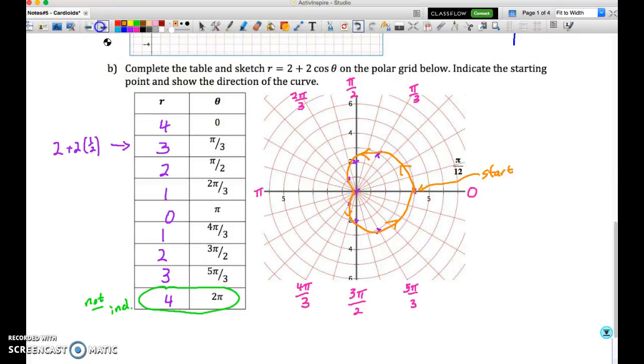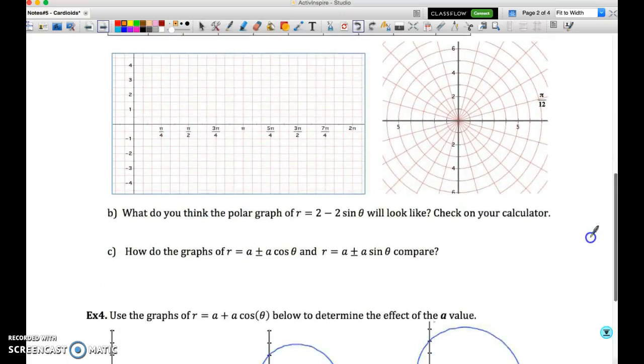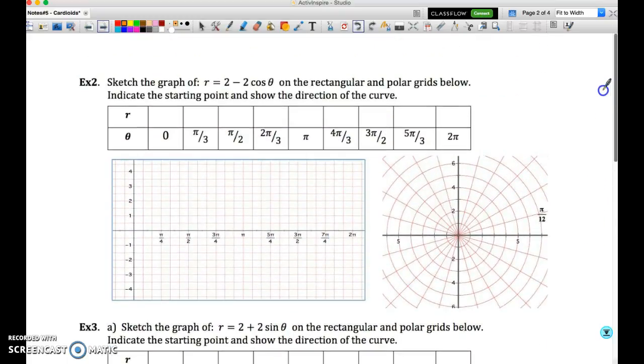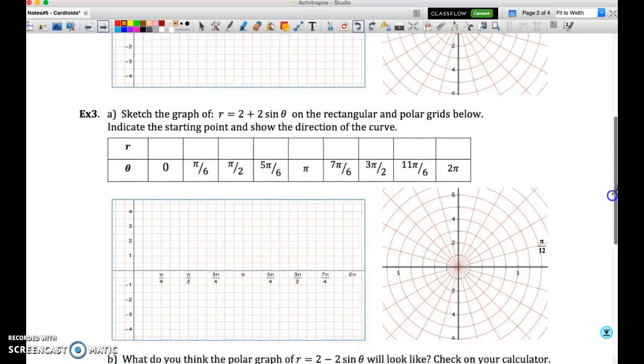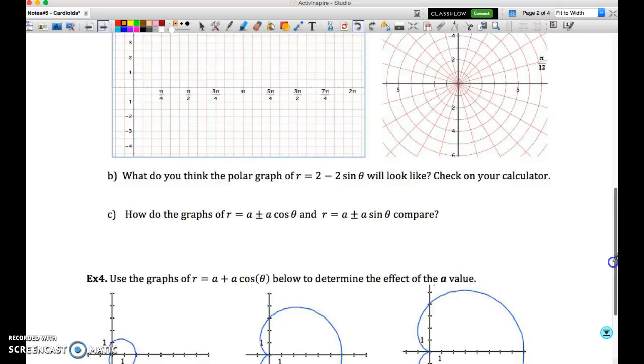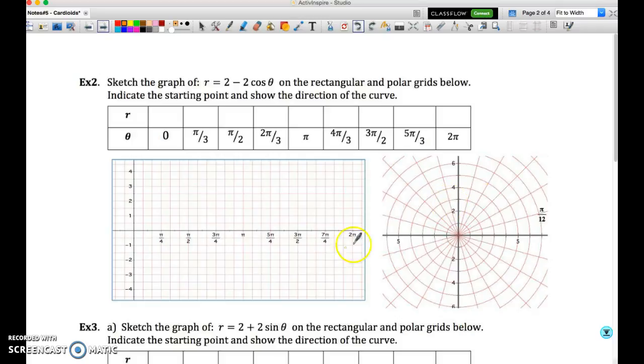And so that is the first of the cardioid graphs. What you should do at this point is go ahead and for examples two and three, go ahead and go through the exact same process as you did before. So you're going to complete the table, use the rectangular trig graph to help you to complete that table, plot the points and draw the cardioid graphs for the next two. And then I'll come back to you and we can start to look for some patterns and identify what takeaways we have from a comparison of the three graphs.